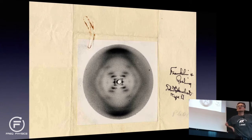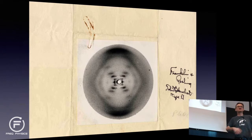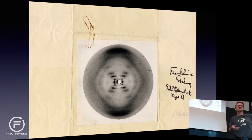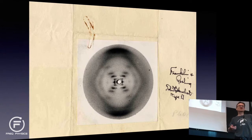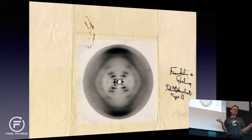DNA was actually first isolated in the late 1800s. Somebody studying pus from infected wounds came up with some sort of other strange compound. At the time they had no idea what this was. But eventually in the first part of the 20th century people were able to isolate this strange molecule that exists in all cells. When you isolate the molecule, there were no obvious easy ways to determine what it looks like.